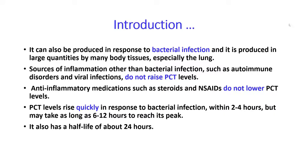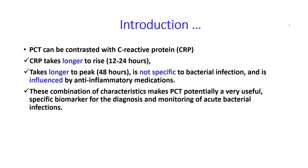Procalcitonin levels rise quickly in response to bacterial infection within 2 to 4 hours, but may take as long as 6 to 12 hours to reach its peak. It has a half-life of about 24 hours. Procalcitonin can be contrasted with C-reactive protein, or CRP. CRP takes longer to rise to peak at 48 hours, is not specific to bacterial infection, and is influenced by anti-inflammatory medications.